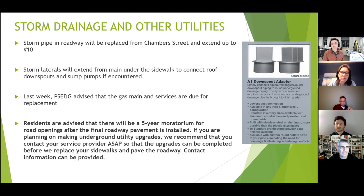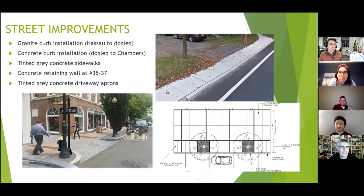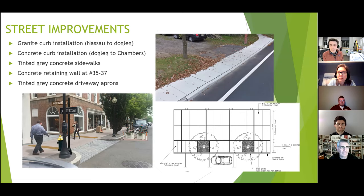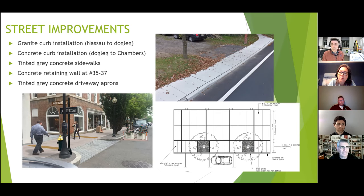For street improvements, we are installing granite curb from Nassau Street down to the dogleg turn, then transitioning to concrete curb from the dogleg to Chambers. Throughout the project, we'll have tinted gray concrete sidewalks, and there will be a small concrete retaining wall adjacent to 35-37 Bank Street. Driveway aprons will also be tinted gray concrete. We will reconstruct any driveways affected by construction to match the existing material.